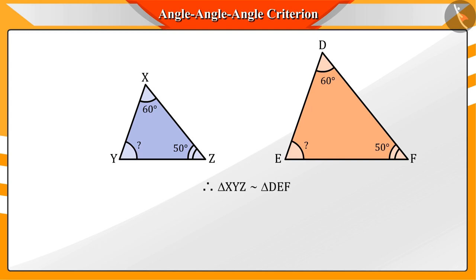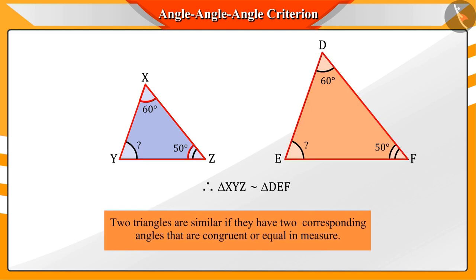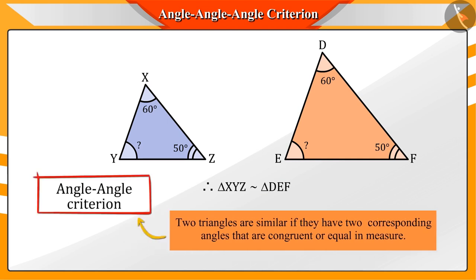Hence, we can conclude that two triangles are similar if they have two corresponding angles that are congruent or equal in measure. We call this the AA criteria for similarity of triangles.